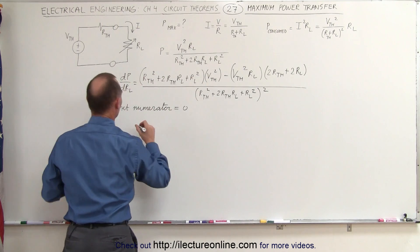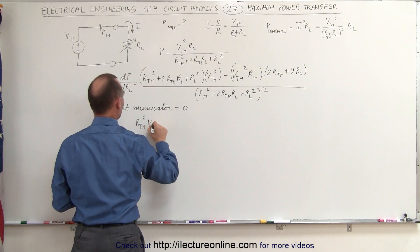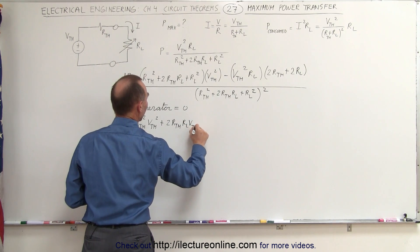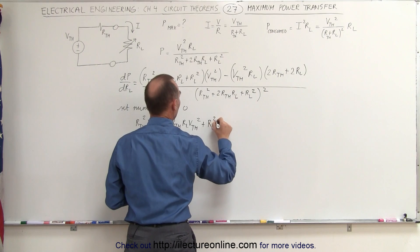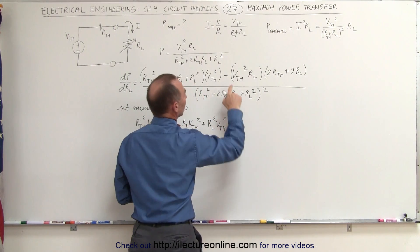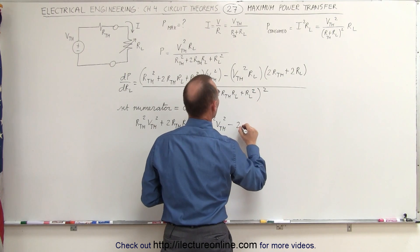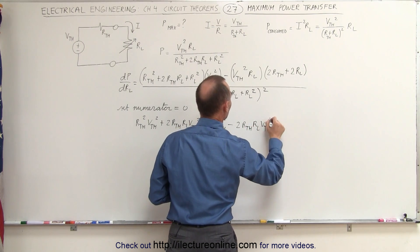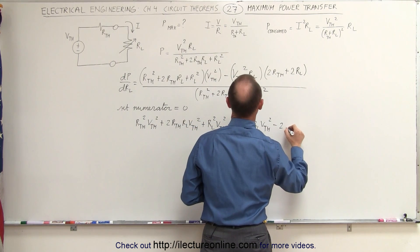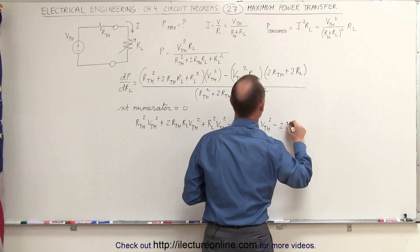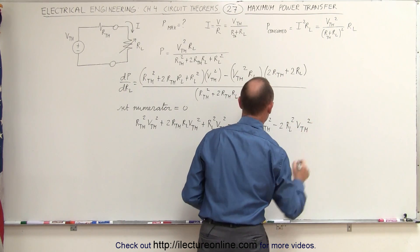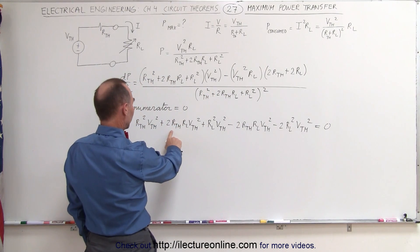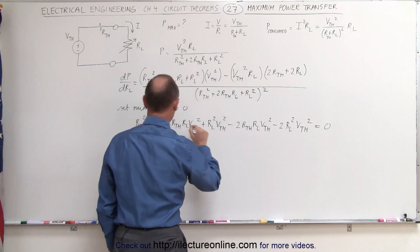Multiplying through, we get R-thevenin squared times V-thevenin squared, plus two times R-thevenin times R-sub-L times V-thevenin squared, plus R-sub-L squared times V-thevenin squared, minus two times R-thevenin times R-sub-L times V-thevenin squared, minus two times R-sub-L squared times V-thevenin squared, all set equal to zero.